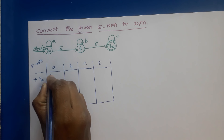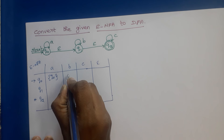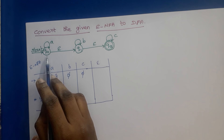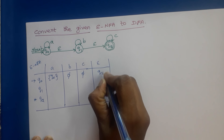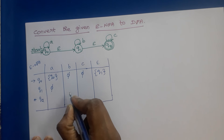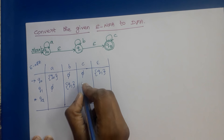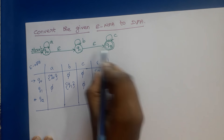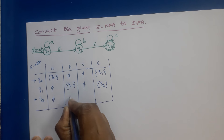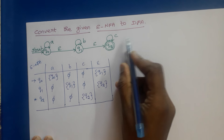From Q0, A goes to Q0. From Q0, there is no transition on B, so phi. From Q0, there is no C transition either. From Q0, epsilon goes to Q1, and transition on B goes to Q1. From Q1, there is no C. From Q1, epsilon goes to Q2. From Q2, there is no A transition and no B transition. C goes to Q2, and there is no epsilon transition from Q2.